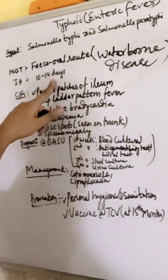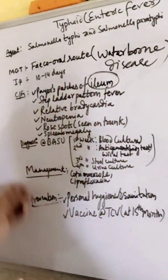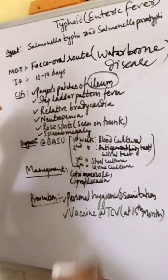Incubation period is 10 to 14 days. Clinical features: Peyer's patches of ileum - it is a part of small intestine: ileum, jejunum, duodenum. Step ladder pattern type fever.